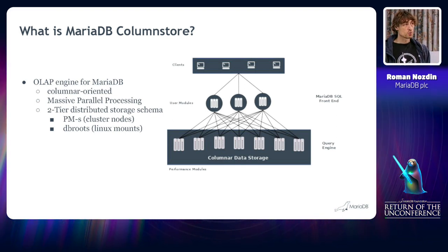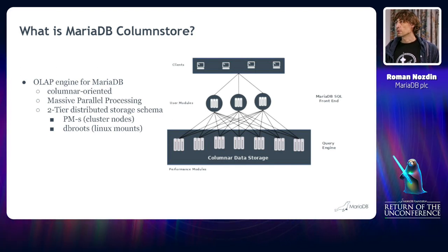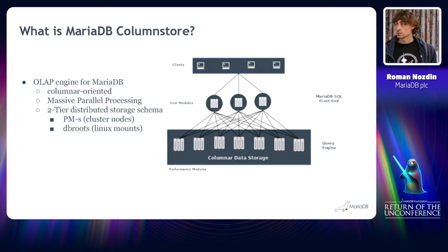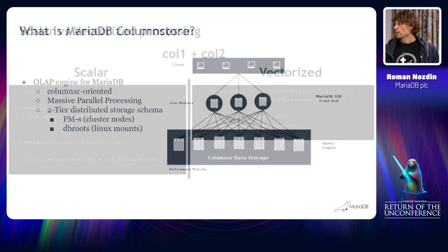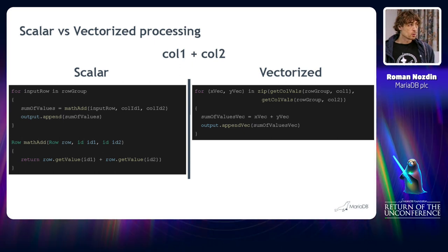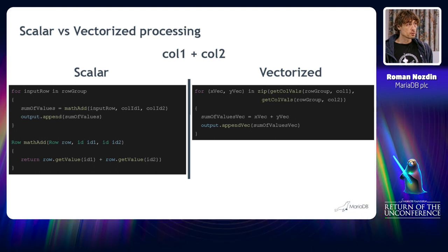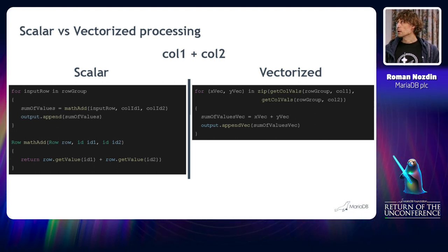First, there is a data distribution between nodes and every node has a number of Linux mounts that we call db-roots. Here's the schema for that. Many of you should know what vectorization is, but for those who are not familiar, I will touch grounds with that.